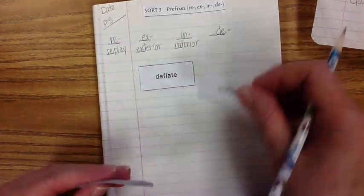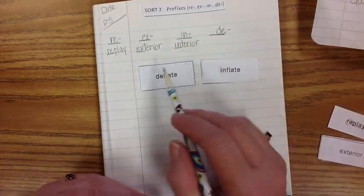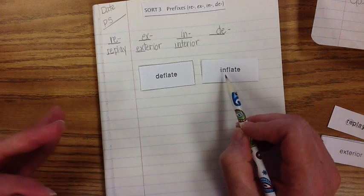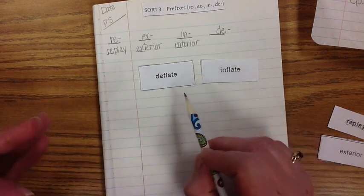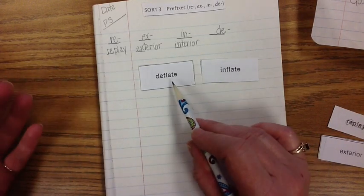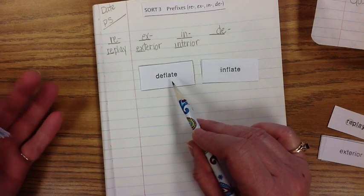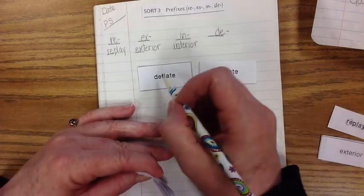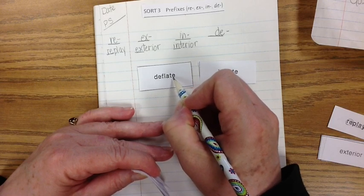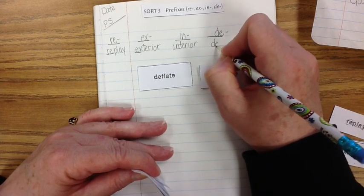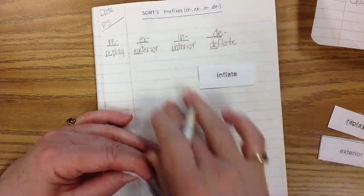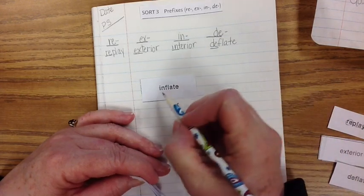Let's see if we can find some more words that may be antonyms. Deflate and inflate. Again, remember, de means to take away. In means inside or into. If we want to inflate a balloon, we are blowing air inside the balloon. If we want to deflate the balloon, we're taking away air. Let's do deflate. D-e-f-l-a-t-e. Underline that. Let's do inflate. I-n-f-l-a-t-e.